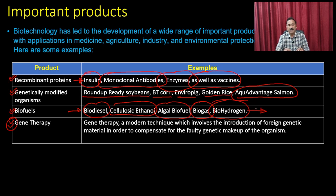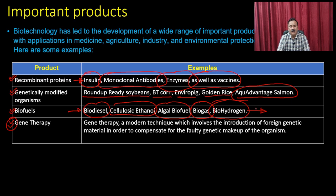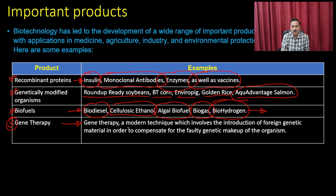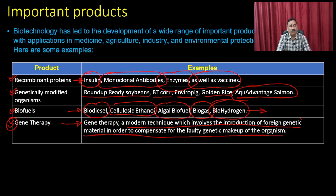Biotechnology is also helping in producing hydrogen gas so that it can be used in place of petrol or diesel, because petrol and diesel are associated with a lot of pollution. We also have gene therapy principles — gene therapy is a modern technique involving the introduction of foreign genetic material in order to compensate for the faulty genetic makeup of an organism.